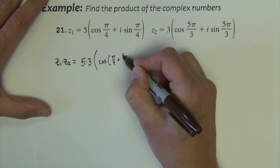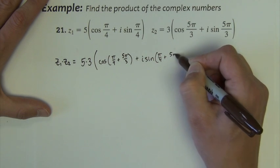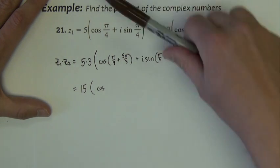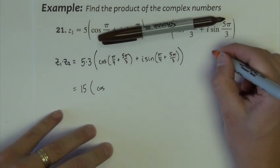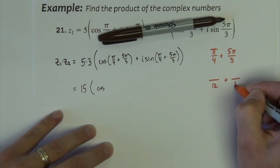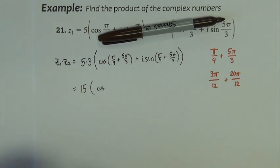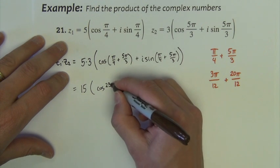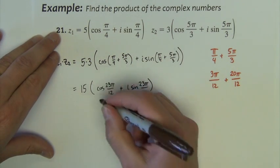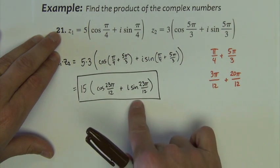We're going to add pi over 4 plus 5 pi over 3, and the same addition for the second term. The product is equal to 15 times cosine of that sum. Let's do that as scratch work: pi over 4 plus 5 pi over 3, making a common denominator of 12 gives us 3 pi over 12 plus 20 pi over 12, which equals 23 pi over 12. So the result is 15 times (cosine(23π/12) + i sine(23π/12)). That is the product, expressed in trigonometric form.